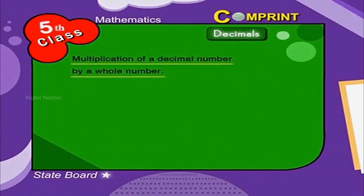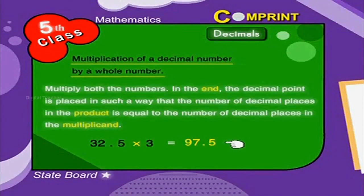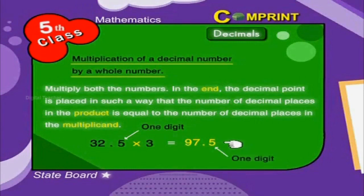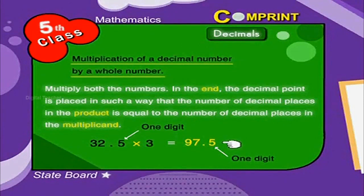Multiplication of a decimal number by a whole number: multiply both numbers, then place the decimal point so that the number of decimal places in the product equals the number of decimal places in the multiplicand. For example, 32.5 multiplied by 3 equals 97.5.